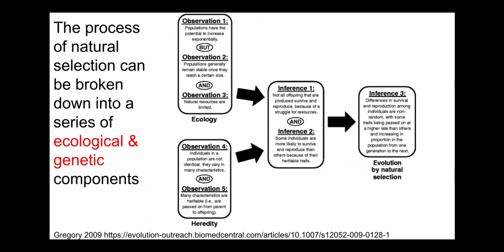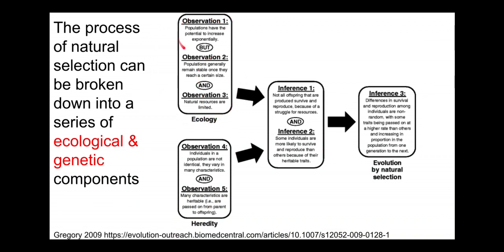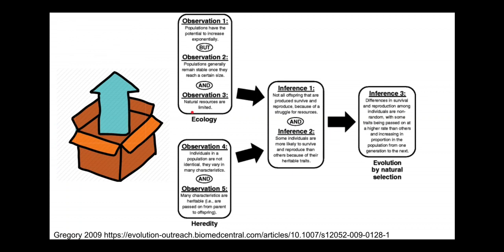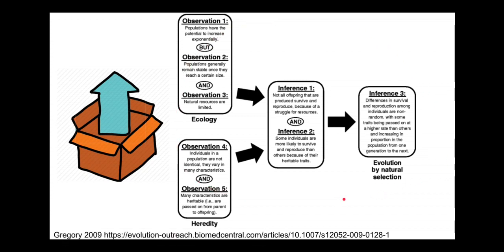This is the framework that Mayr came up with for explaining Darwin's logic. This particular picture comes from Gregory 2009. There are a set of ecological components and a set of genetic components. In this video we'll start off talking about the first major ecological component: exponential population growth. In another video we'll talk about the next set — population stability and resource limitation — and what that does to population growth.